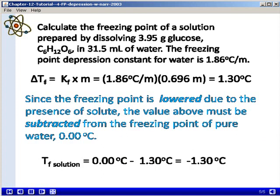Since the freezing point is lowered due to the presence of the solute, the value above must be subtracted from the freezing point of pure water. The freezing point of pure water is 0 degrees Celsius. So the final freezing temperature of the solution is 0 degrees Celsius minus 1.30 degrees Celsius, which gives us negative 1.30 degrees Celsius.